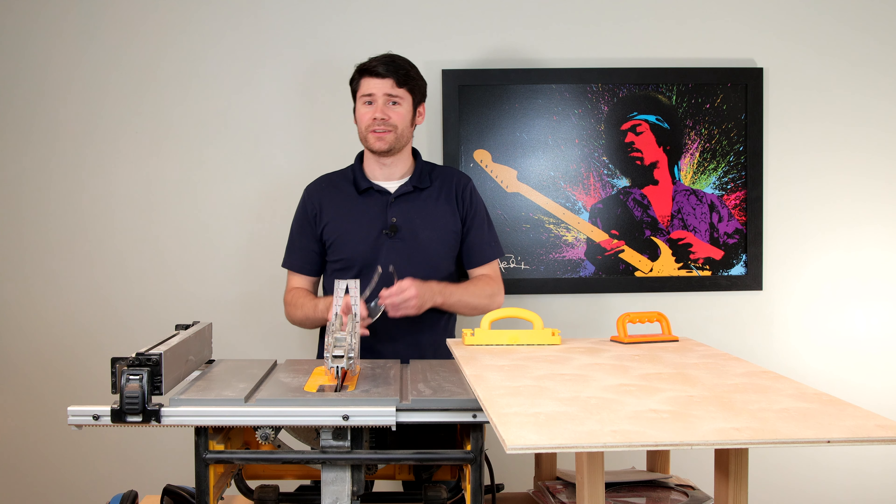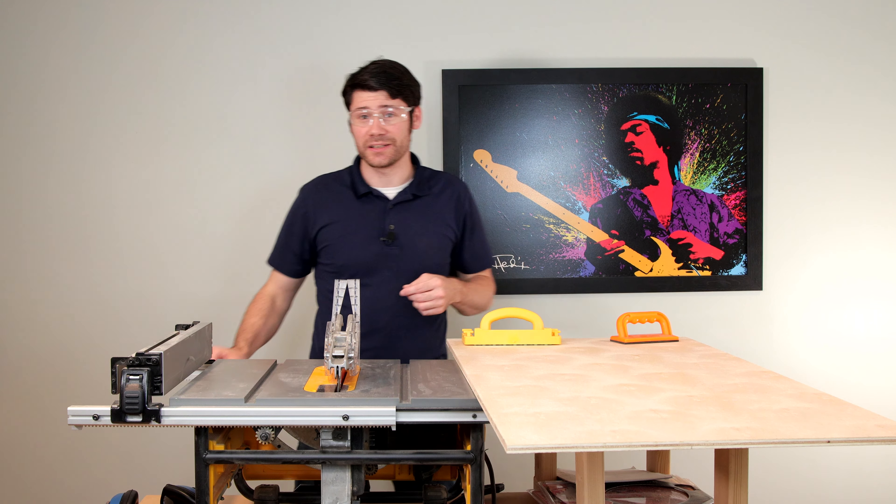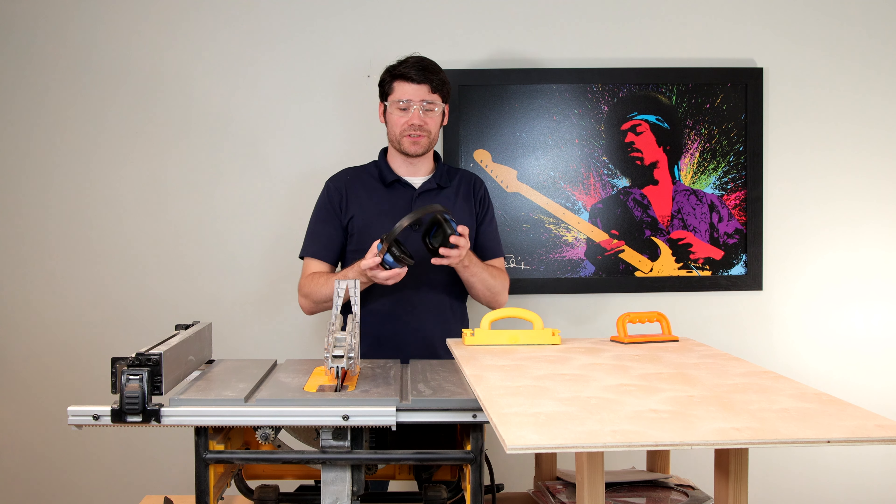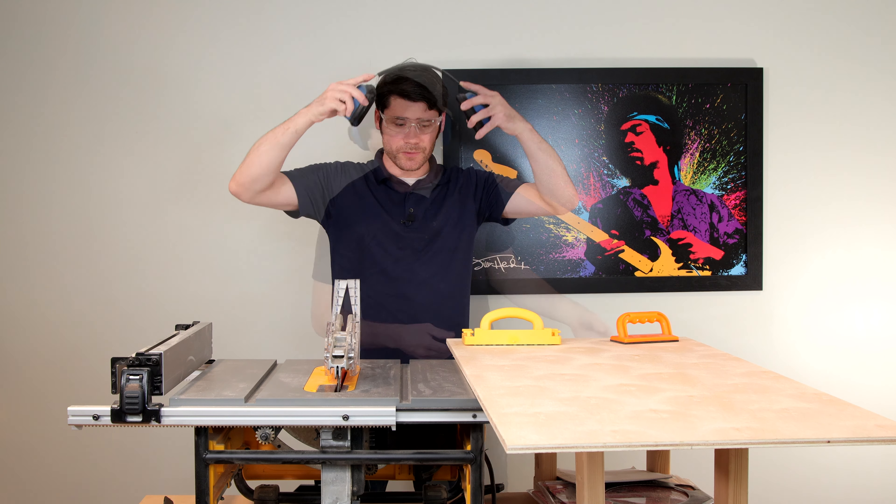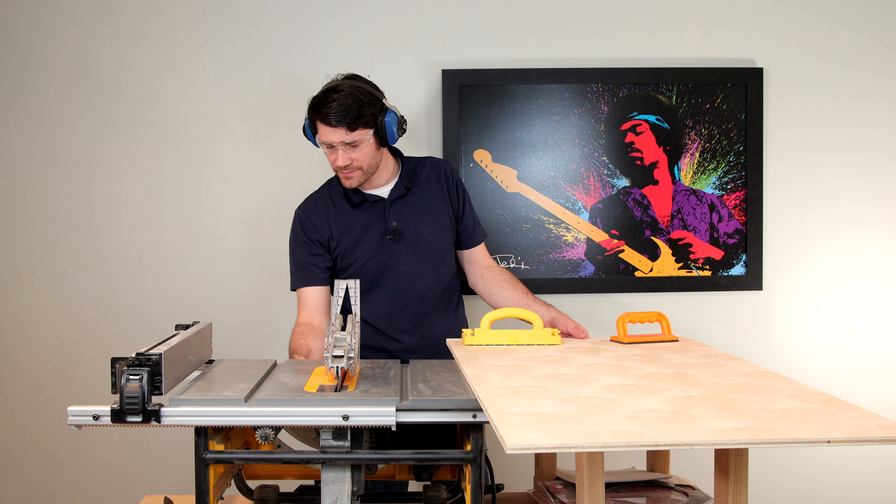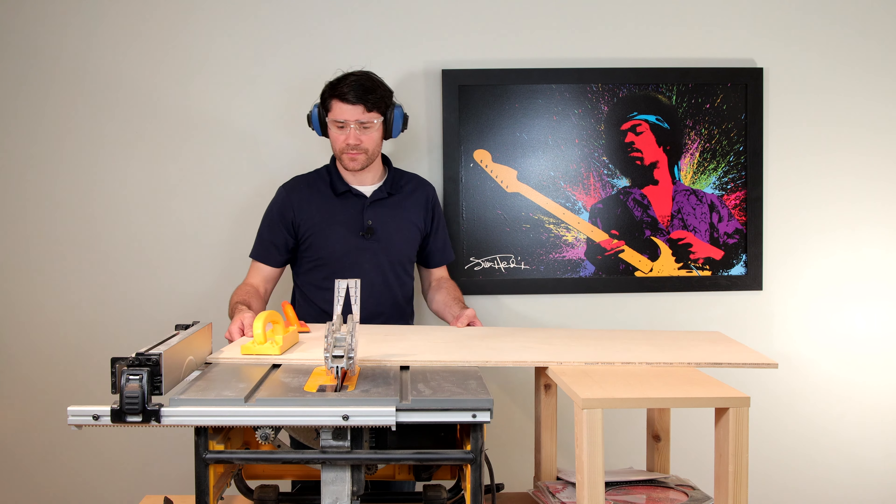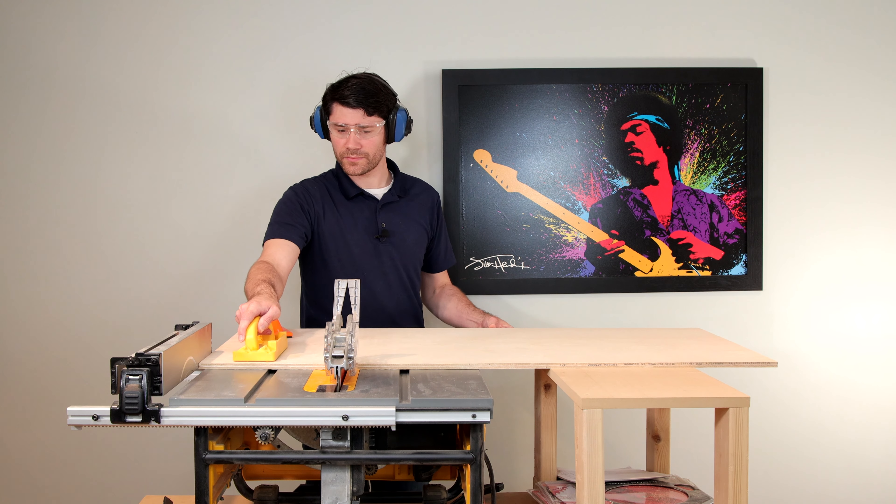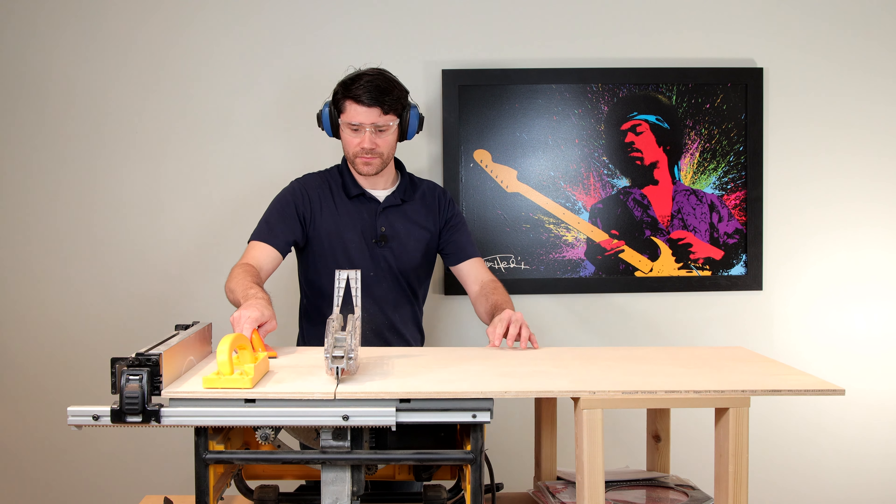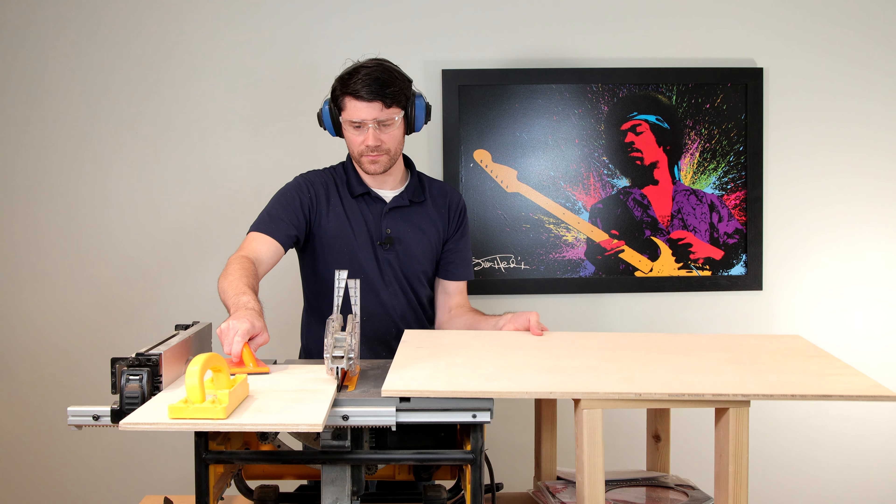Of course, use eye protection when working with power tools and hearing protection when it's real loud. First, we're going to make a cut of one foot in width off the long side of the two by four sheet of plywood. This piece will be used for the feet of the pedal board.